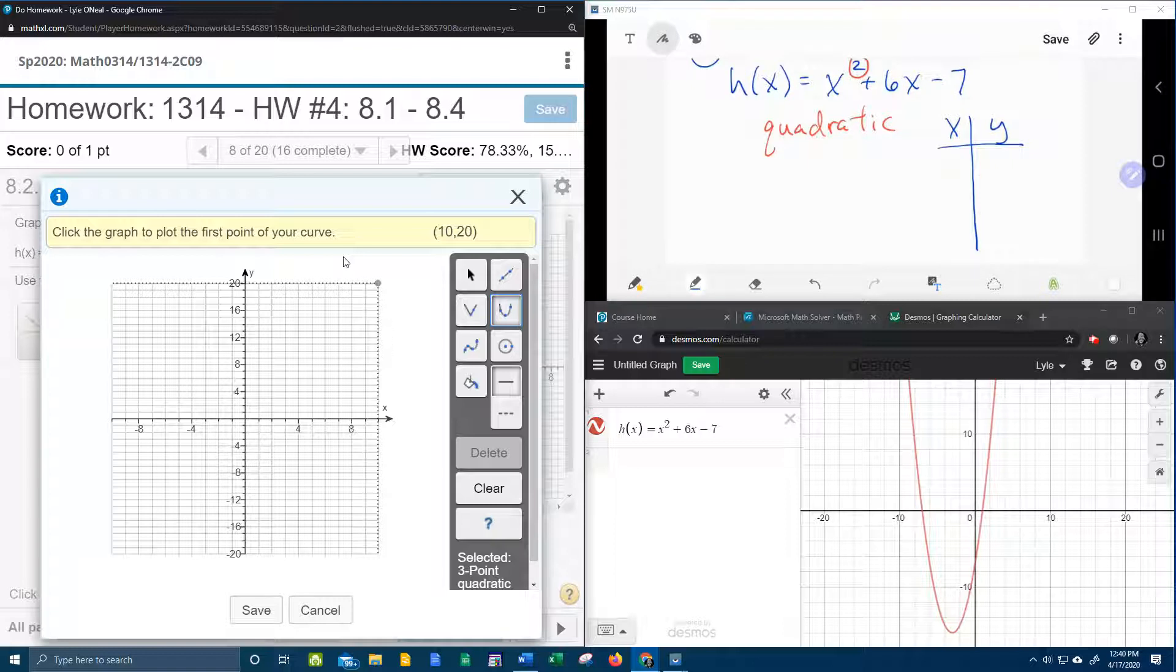So the easiest x to work with in my opinion is 0. Let's pick 0 first. That's going to make every term that has an x go to 0, and leave negative 7.